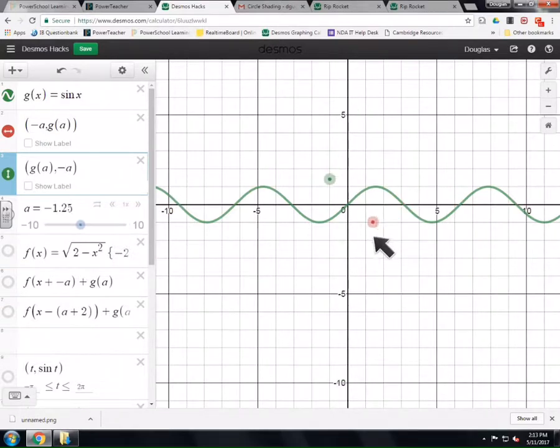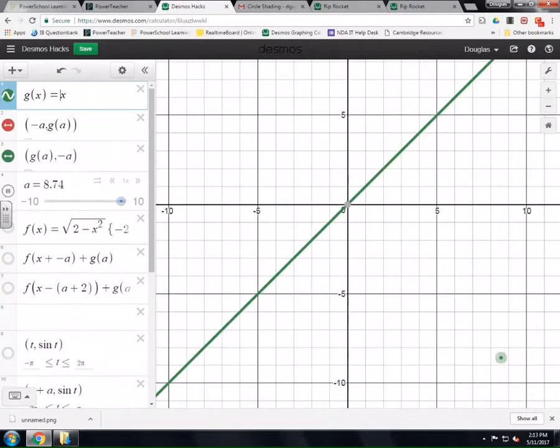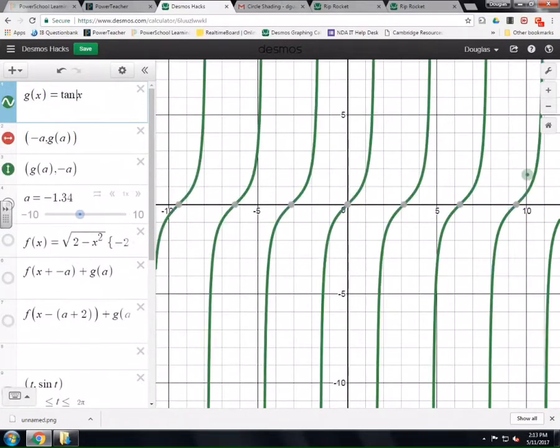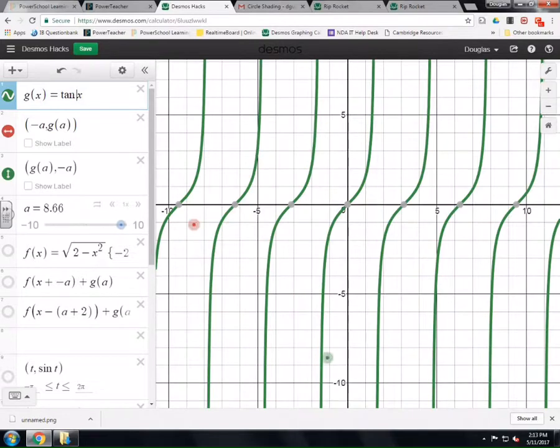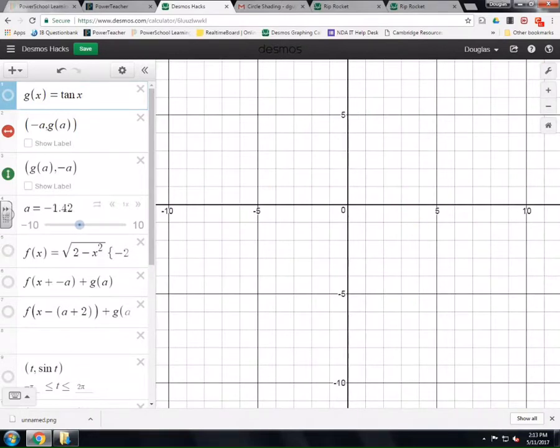And now we've got points flying over a sine wave. The other great thing about this is you can make g of x anything you want. So, for example, we can turn the sine of x into tangent of x. And now the points are going to follow tangents and inverse tangents across the page.